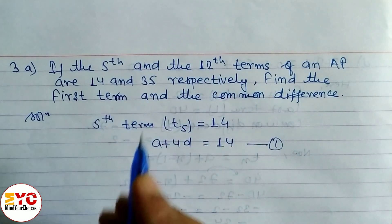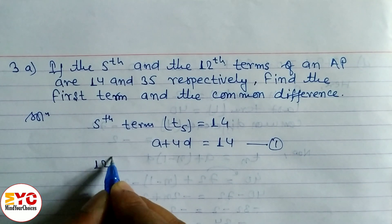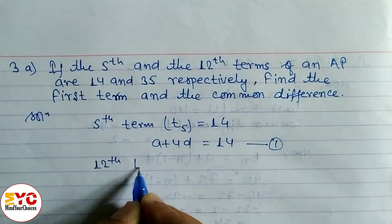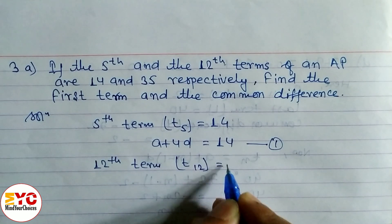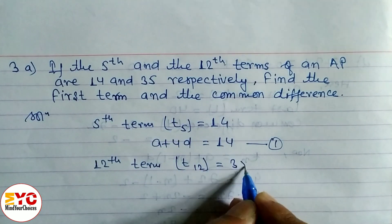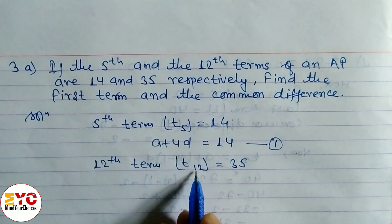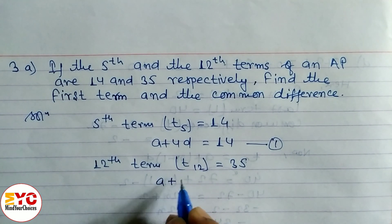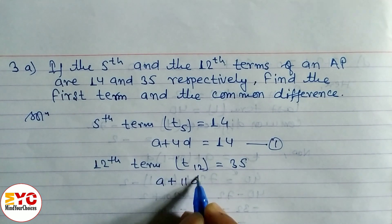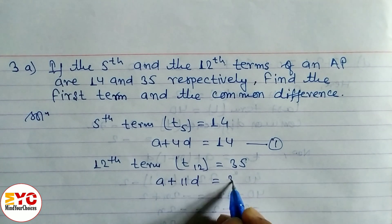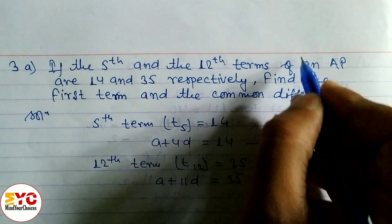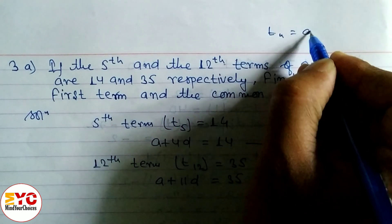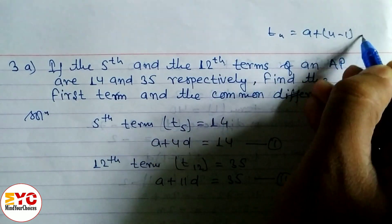Similarly, the 12th term is equal to 35. So T12 is equal to 35. Using the formula TN equals A plus (N minus 1)D, if N is 12, then 12 minus 1 gives 11. So we write A plus 11D is equal to 35. This is equation 2.